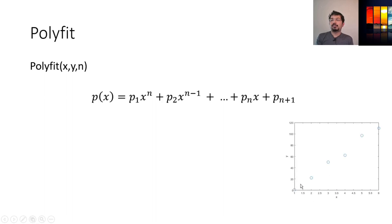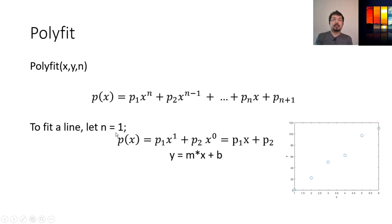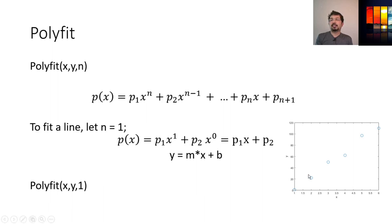Since our data looks like a linear function, we can plot a line that goes through most of the points. A linear function is represented by setting n equal to one. Evaluating the polynomial with n=1 gives p1·x + p2, which is another form of y = mx + b, a linear equation. So if we put x, y, and one into polyfit, we are fitting the data assuming it follows a linear function. Let's go to MATLAB and do that.